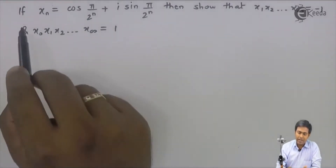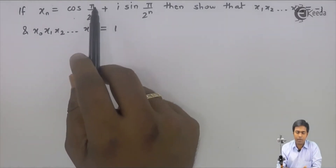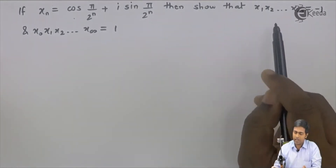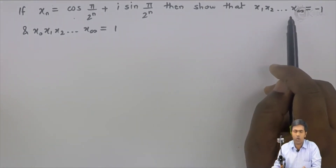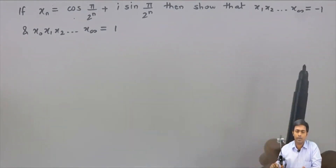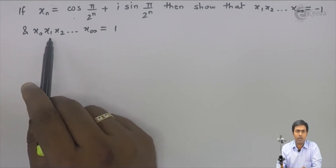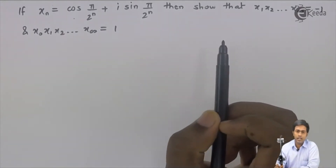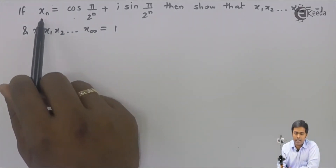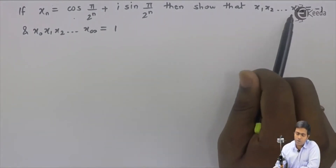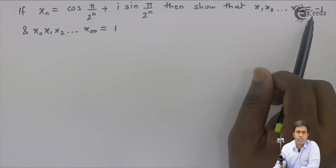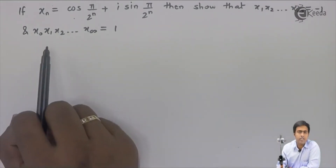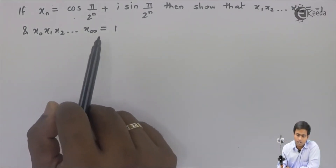Now let's see one more problem. If x_n is cos(π/2^n) + i·sin(π/2^n), then show that x1·x2·x3·...·x∞ = −1, and x0·x1·x2·...·x∞ = 1. We have been given a general term x_n. To prove these two results: in the first result we want the product of all terms starting from x1, and in the second result we want the product of all terms starting with x0.